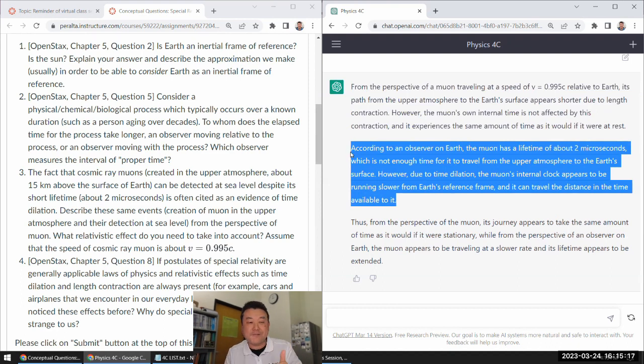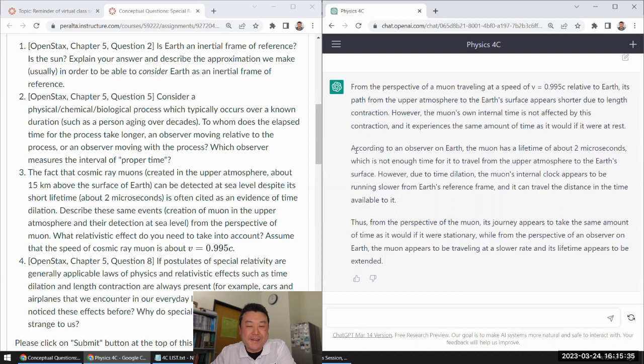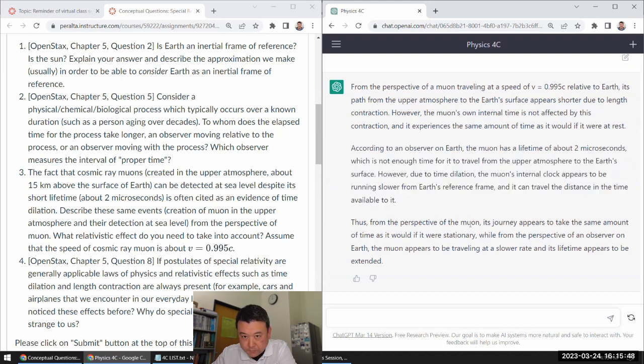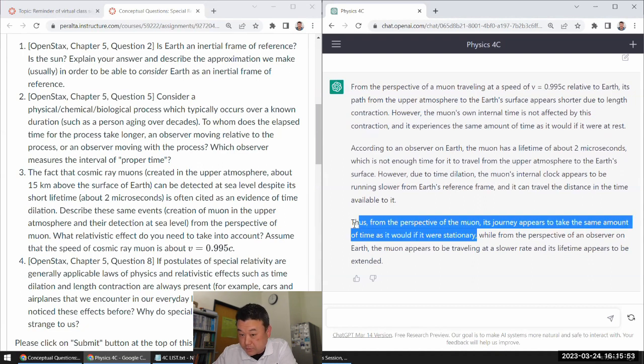Which is good for me, because I want ChatGPT to be wrong. I don't want it to be the perfect tutor, perfect tool. Depending on the progress of artificial intelligence, it might actually get there, but it also might not. This definitely is something that maybe future version of ChatGPT will get right, but right now it's not getting it right. Thus, from the perspective of the muon, the journey appears to take the same amount of time, which is right.